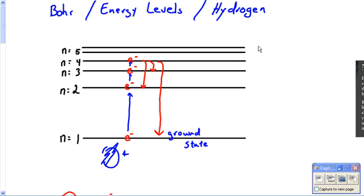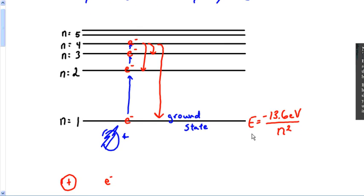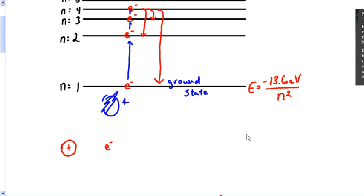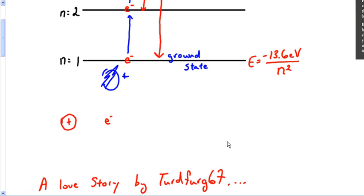Bohr gave us a very handy little equation — this is just for hydrogen. He said for hydrogen, the energy it would take to remove any electron from any energy level is equal to negative 13.6 divided by n squared. We could actually derive that using some physics if you wanted to, but we won't get into it in this video.